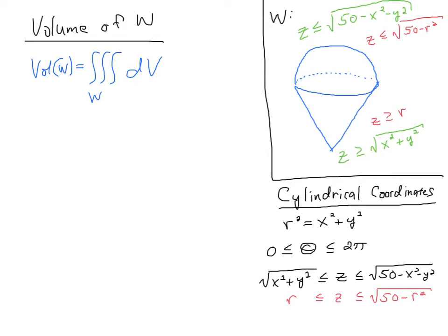Now, to convert this integral to cylindrical coordinates, I will use the definition for r here. r is the square root of x squared plus y squared.